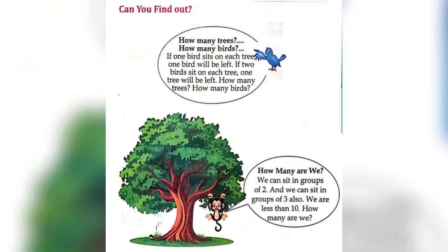Can you find out how many trees and how many birds? If one bird sits on each tree, one bird will be left. If two birds sit on each tree, one tree will be left. So here we can see there are two trees and three birds.